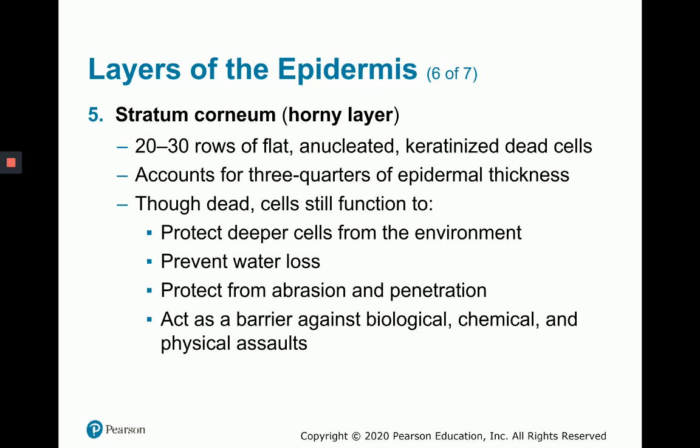Stratum corneum, also called the horny layer, is one of the thickest layers of the epidermis — 20 to 30 rows of flat, enucleated, keratinized dead cells. What remains is prekeratin and keratin fibers. Stratum corneum accounts for three-quarters of epidermal thickness. Even though these cells are dead, they are very protective, shielding deeper living cells from abrasion or injury. The lamellar granules remain intact and prevent water loss.